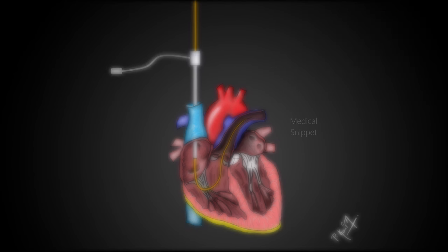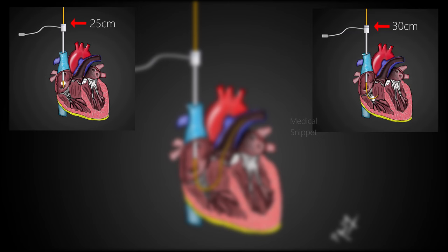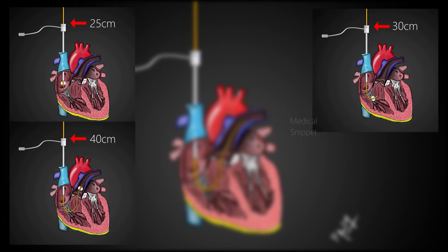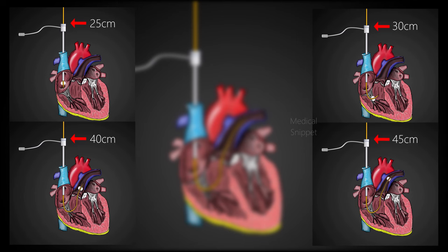Usually the right atrium is entered at 25 cm, the right ventricle at 30 cm, and the pulmonary artery at 40 cm. The wedge pressure can be identified at 45 cm.